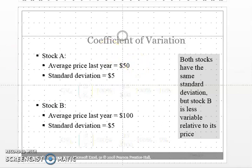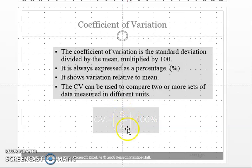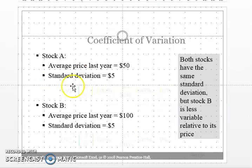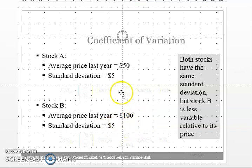Last lecture we saw how to calculate the coefficient of variation. It is calculated using the formula CV = S / x̄, where S is standard deviation and x̄ is the mean, expressed as a percentage. Looking at stocks A and B: since stock B has a higher mean with the same standard deviation, its CV is lower, meaning stock B is less variable relative to its price.